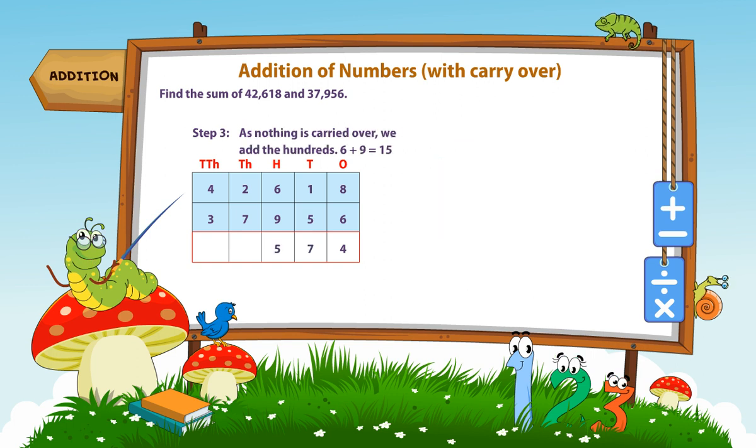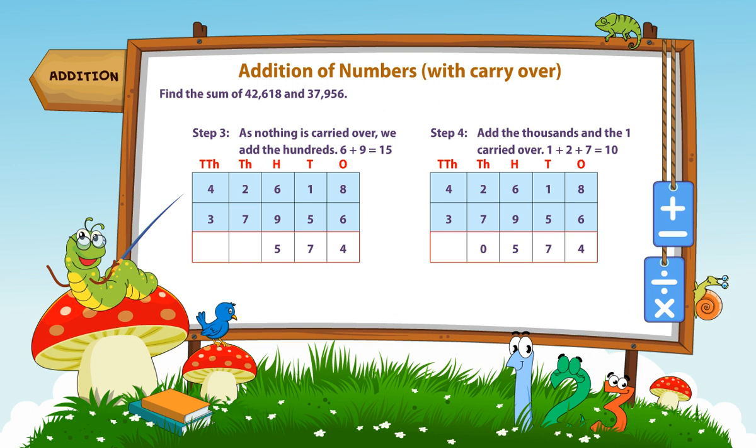Step 3. As nothing is carried over, we add the hundreds. 6 plus 9 is equal to 15.